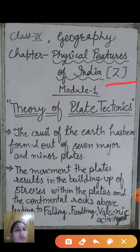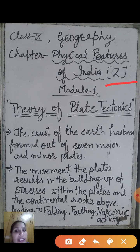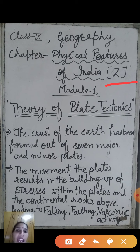So what do we mean by physical features? Physical features means all those landscapes, all the relief features which we can see and we can touch. Those features made by nature that we can touch and see are called physical features.